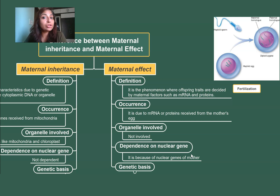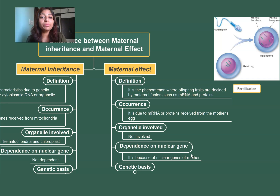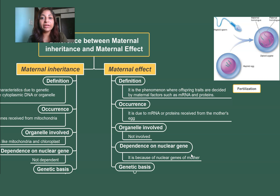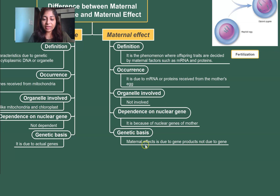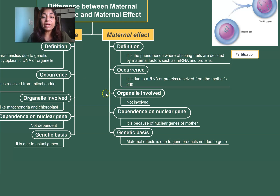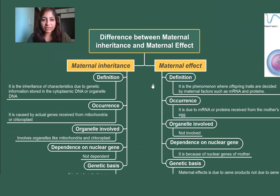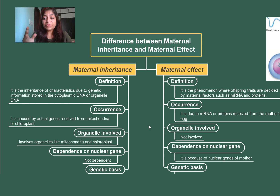A very popular example of maternal effect is the coiling pattern — the shell coiling pattern of the snail. For predicting the phenotype of the individual, we don't look at the genotype of the offspring; we look at the genotype of the mother. Whatever is the mother's genotype, accordingly the proteins and mRNAs will be present in the cytoplasm and passed on to the zygote. There is no dependency on the zygote's genetic material. The genetic basis of maternal effect is not the genes themselves but the gene products — the mRNA and proteins.